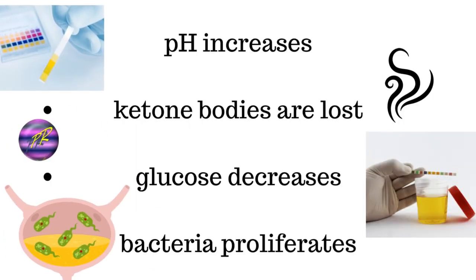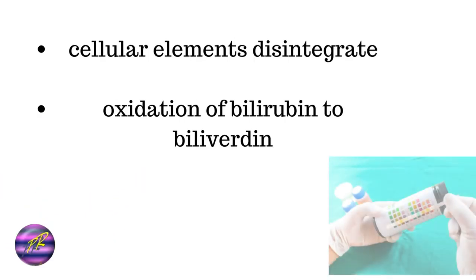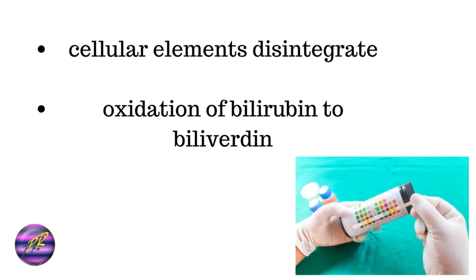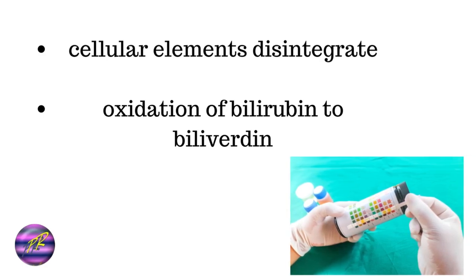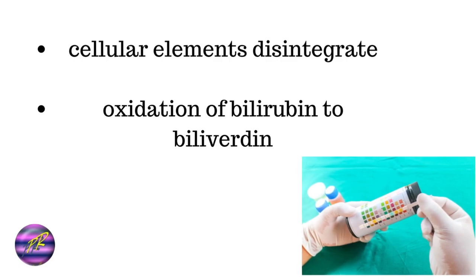In standing urine, the pH increases — that is, it becomes more alkaline. Ketone bodies are lost, the amount of glucose decreases, and bacterial proliferation will happen. In addition, cellular elements will disintegrate and oxidation of bilirubin to biliverdin happens.